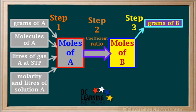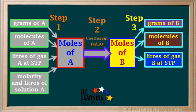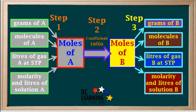The quantity of B asked for might be the mass of B in grams, or the molecules of B. Or if B is a gas at STP, we might be asked for the volume, which we can calculate in liters. Or if B is in solution, we may be asked to calculate either the molarity or the volume of solution B. All of these quantities can be calculated from the moles of B.